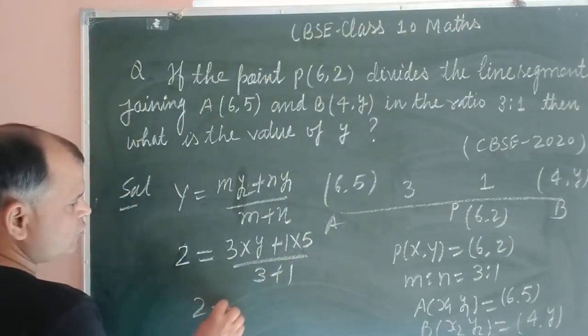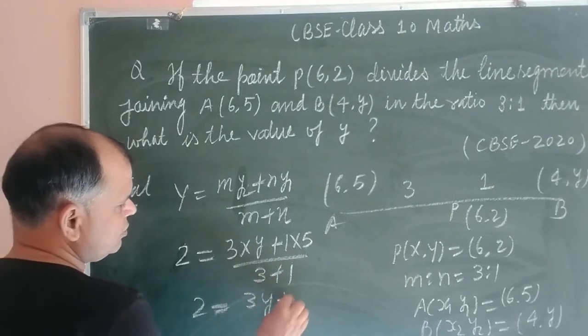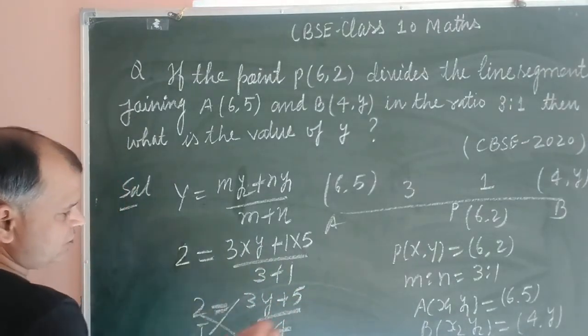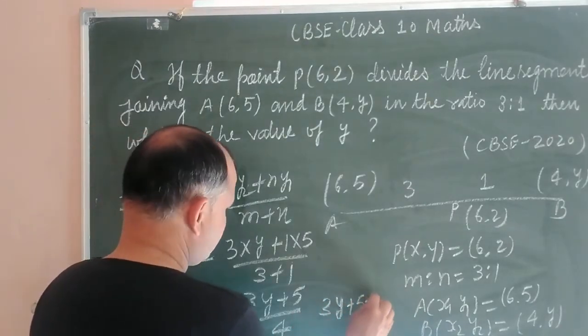So 2 = (3Y + 5)/4. On cross multiplication, 3Y + 5 = 8.